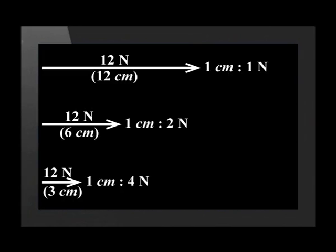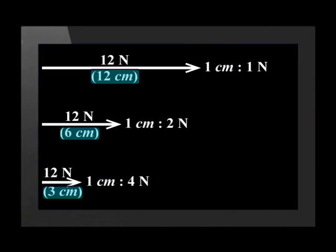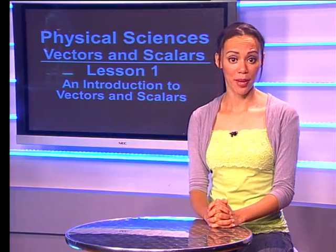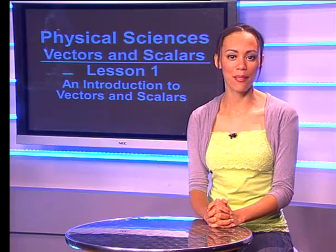All three of these representations are correct. You can see that the scale we choose determines how long the lines are. Remember, we also need to represent the direction of the vector. If an object moves in one dimension only, we can use directions such as left and right or east and west. When vectors act in opposite directions, we make one direction positive and the opposite direction negative, like on a number line.